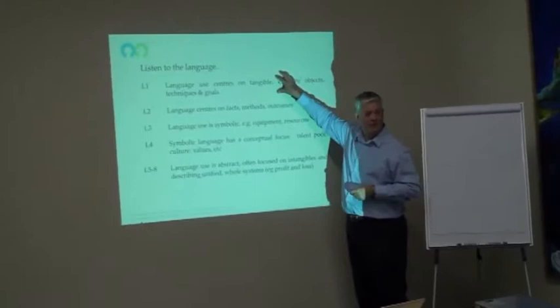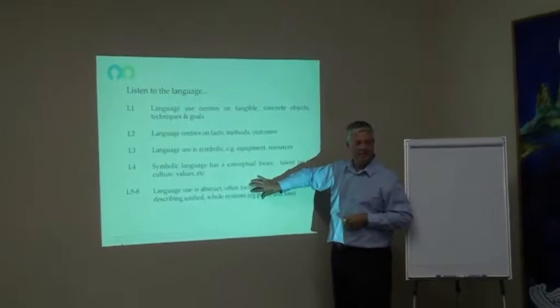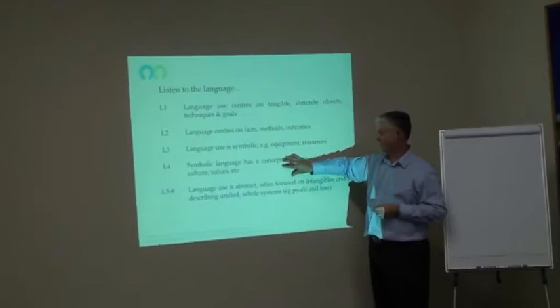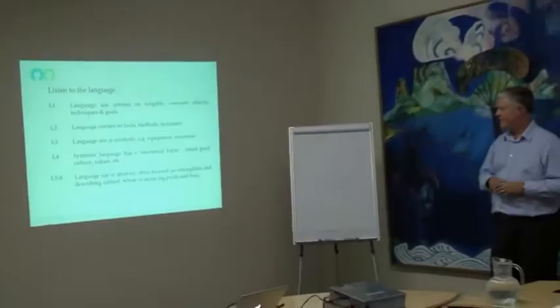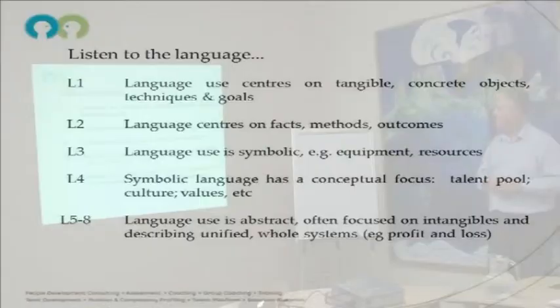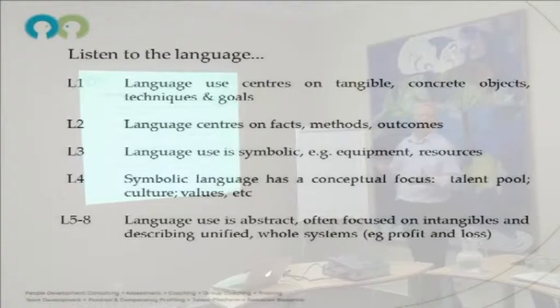Because this person cannot hear this language, and of course it has no relevance on a desert island. Level 5, moving up to level 7, perhaps even level 8 — language uses abstract concepts, it's focused on intangibles, describes whole systems. Profit and loss is one example, but I'm talking very abstract concepts of profit and loss.